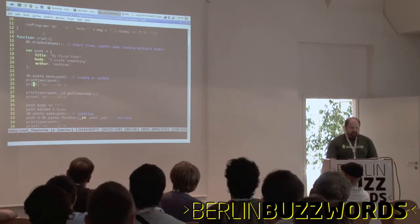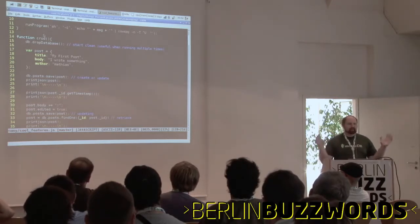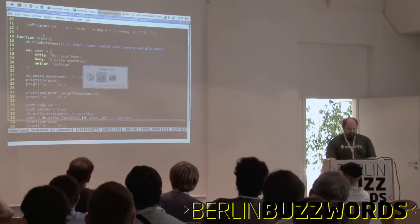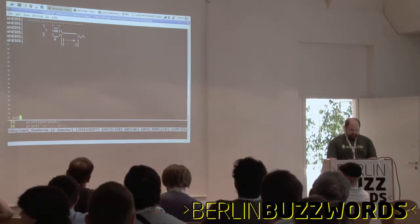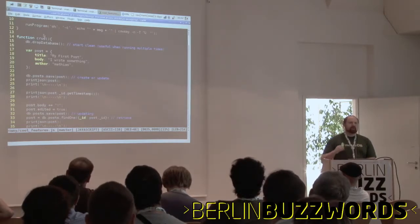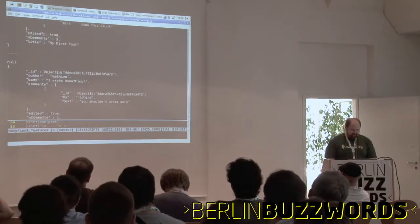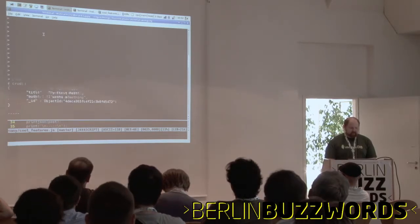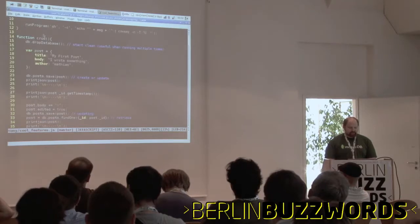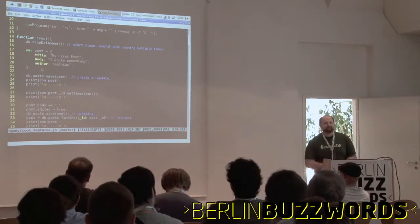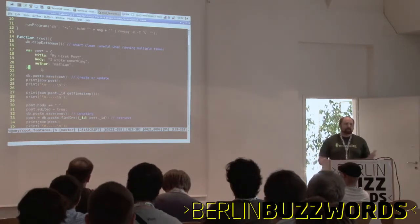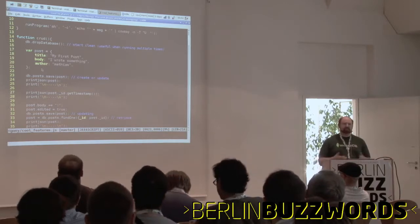I'll go ahead and start with CRUD — everyone knows CRUD: create, retrieve, update, delete — the basic things that everyone likes to do with a database. I'll run this function and then go through it line by line to see what it's doing. This is going to be a very simple blog-like application. I've created a post, and this is basically JSON — it's using JavaScript syntax to build a JavaScript object.